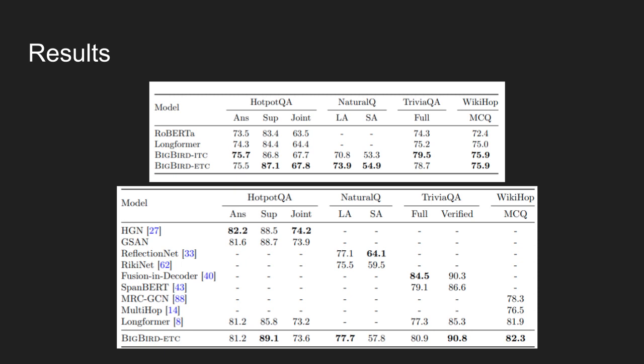The top table shows Q&A dev results using base size models, and the bottom table shows fine-tuning results on test set for Q&A tasks. As shown in the table, Big Bird ETC achieves new state-of-the-art performance on natural questions long answer, trivia QA verified, and wiki hop.